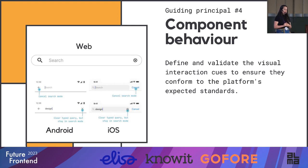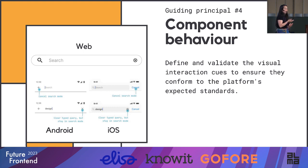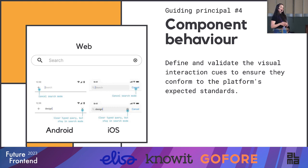Guiding principle number four: component behavior. Take a search box as an example. You should define and validate the visual interaction cues to ensure they conform to platform expected standards. On web, clearing your search is normally done with an X icon that appears on the right corner. But on Android and iOS, they have their own behavior — the search box has a cancel button that is always displaying. On Android, you also get a little icon that appears only once you start typing. You don't have to redesign component behavior when making a cross-platform design system; stick to what's native to the mobile platforms.